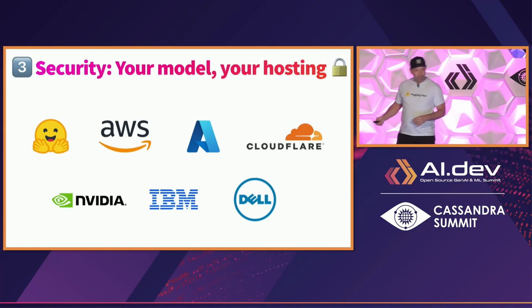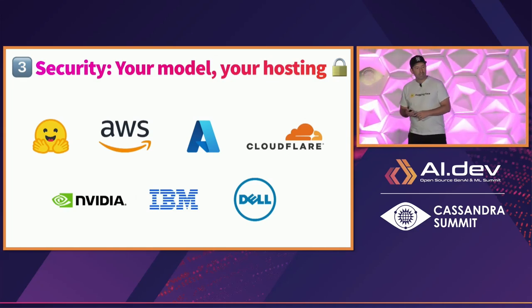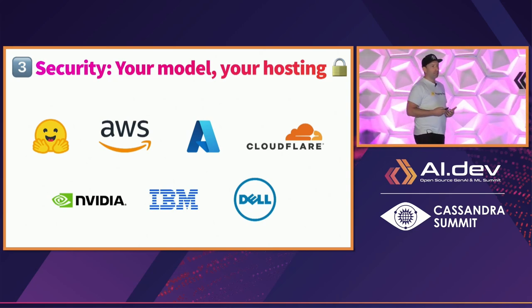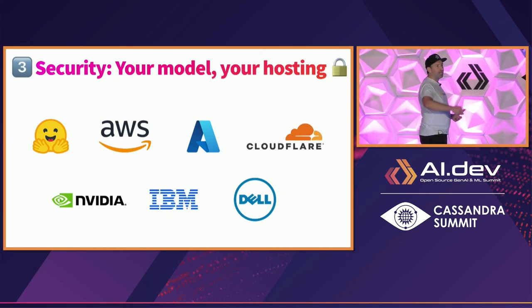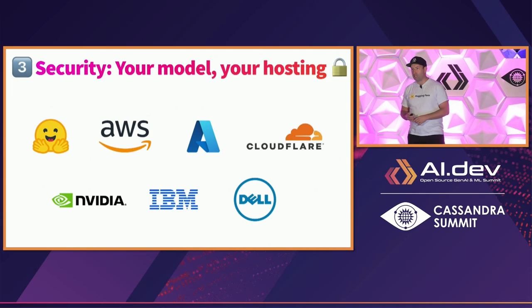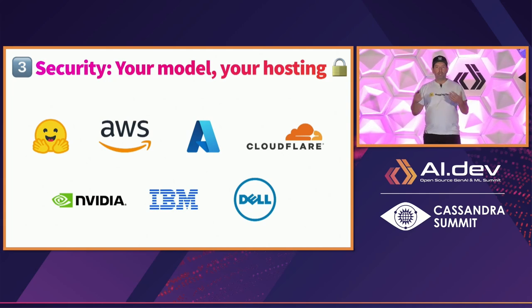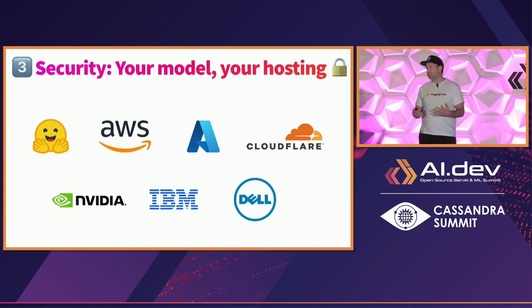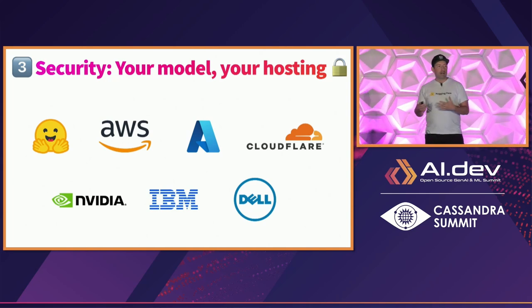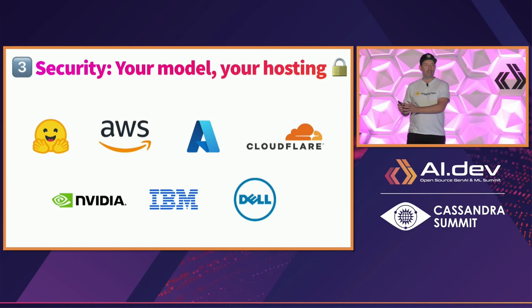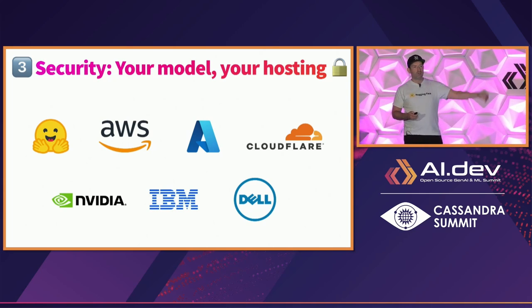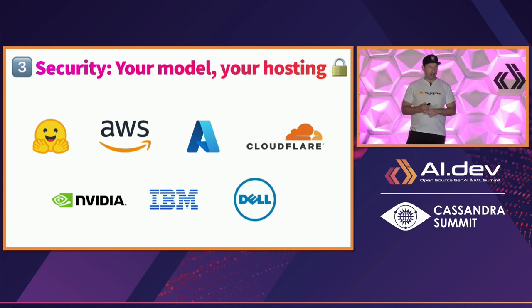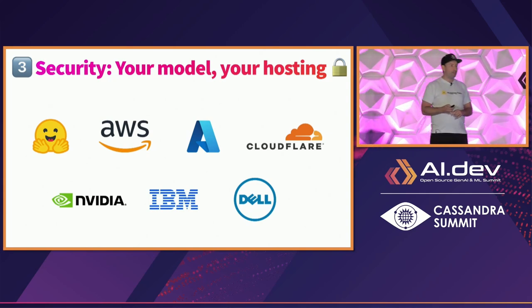Number three: you should build your AI with open source because then you can own the model and host your own model. That's the only way to have truly secure applications where you're not sending your customers' information or source code to a third party over the internet. We offer our own model hosting on Hugging Face, and we build partnerships with all the main cloud providers so you can deploy models within their secure environments — AWS, SageMaker, Azure, Cloudflare, DJX Cloud, NVIDIA, IBM WatsonX, and even on-premise with Dell systems.